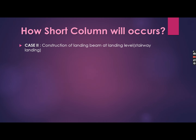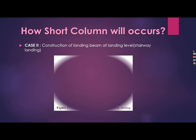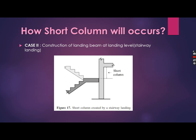Case two: construction of a landing beam at the stairway landing level also introduces the short column effect. Assume a staircase lands on a landing beam that is rigidly joined with a column. In this case, two short columns are formed, and with the formation of these two short columns, the short column effect is introduced in the building.